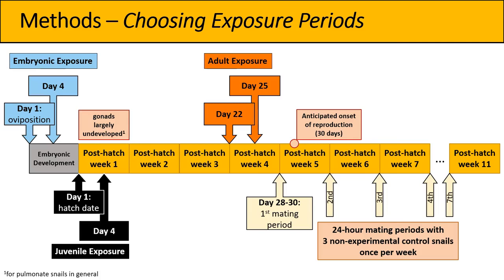I had three exposure groups plus a control group. The embryonic exposure group received one dose of predator cue on the day their egg mass was oviposited and a second dose three days later. The juvenile exposure group received their first dose on their hatch date and a second dose three days later. For the adult exposure group, I timed the doses just prior to the onset of egg laying or full sexual maturation — during the fourth week post-hatch, on the first day of that week and three days later.